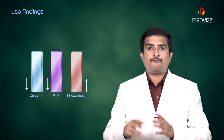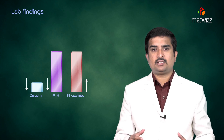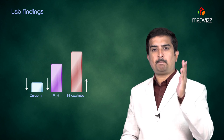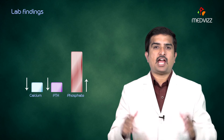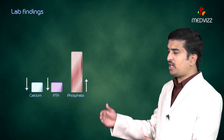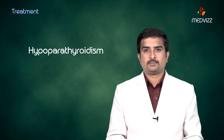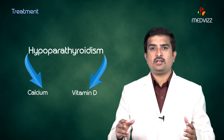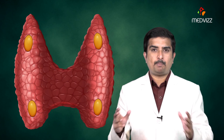In lab findings, hypocalcemia is present, and in hypoparathyroidism specifically, hypocalcemia plus decreased PTH levels is the gold standard criterion, always associated with increased serum phosphate levels. Treatment involves calcium as well as vitamin D supplementation.